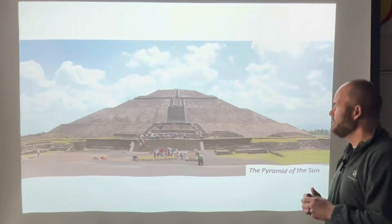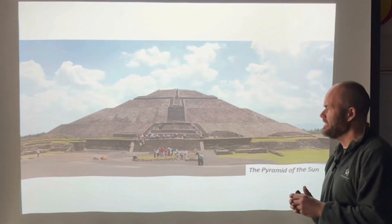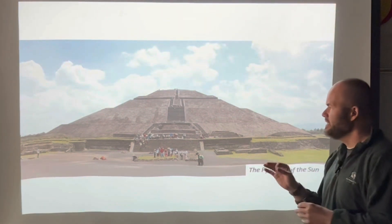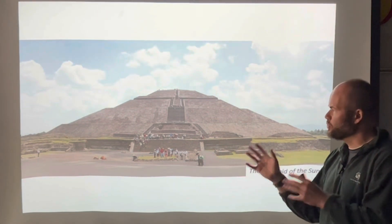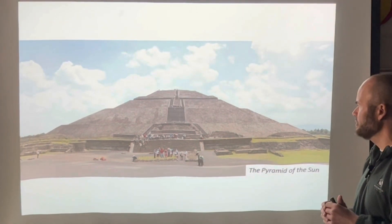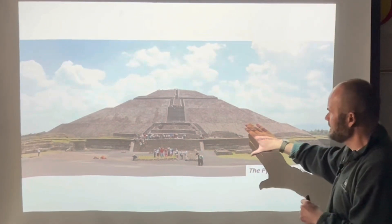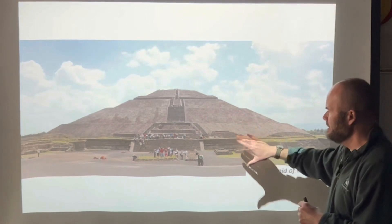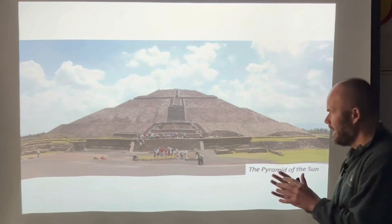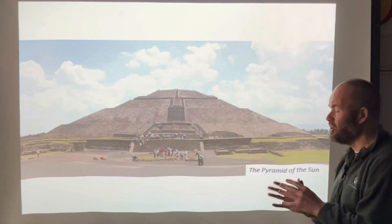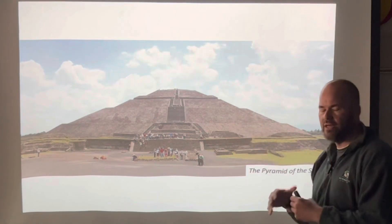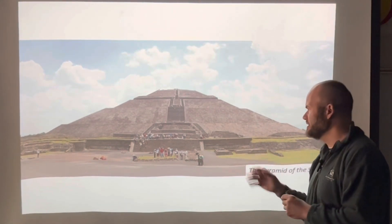This is the Pyramid of the Sun, which is over 700 feet wide and over 200 feet tall. The city of Teotihuacan has three major pyramids, but the Pyramid of the Sun is the largest. I'll be curious to compare the style of this pyramid with the pyramids of the Maya and the Aztecs and consider how similar they are and how likely it is there might have been influence. This is a photograph, so it's a site you can still visit today.